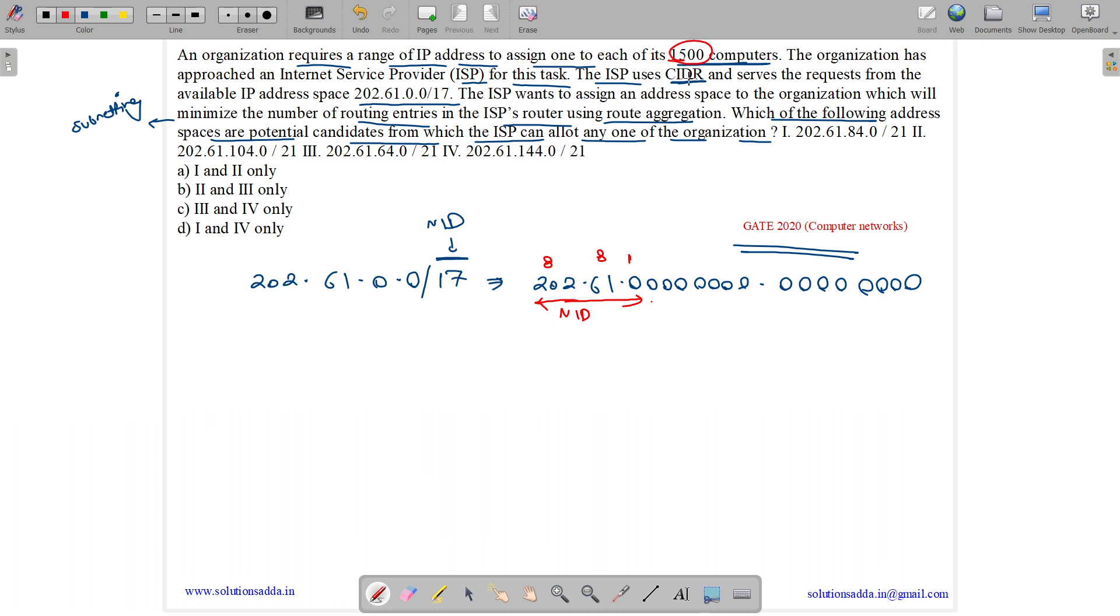But we need 1500 computers. So what is 2 to the power 10? It is 1024 and 2 to the power 11 is 2048. So we actually need 11 bits for our host ID. We have eight over here and three over here. So these are host ID.